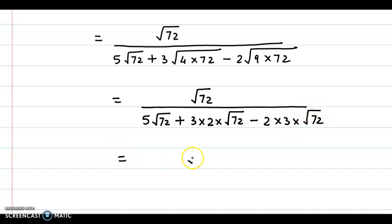Further we get root 72 upon 5 root 72 plus 3 times 2 is 6, so we have 6 root 72 minus 2 times 3, again that's 6 root 72.